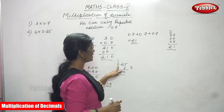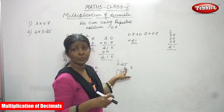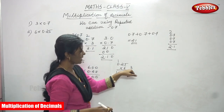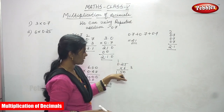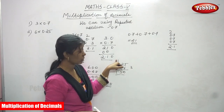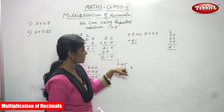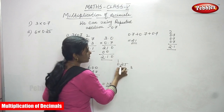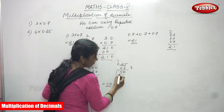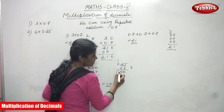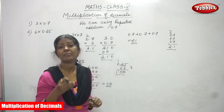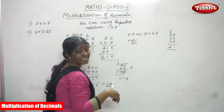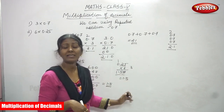Alternatively, write the decimal number 0.25 as it is, then multiply by the whole number 6. 6 fives are 30, carry 3. 6 twos are 12, plus 3 is 15, carry 1. In the zeros place, 0 into 6 is 0, plus 1 is 1. There are two digits after the decimal, so the answer is 1.5. The trailing zero is not necessary — you just cancel it. The answer is 1.5. Both methods are correct.